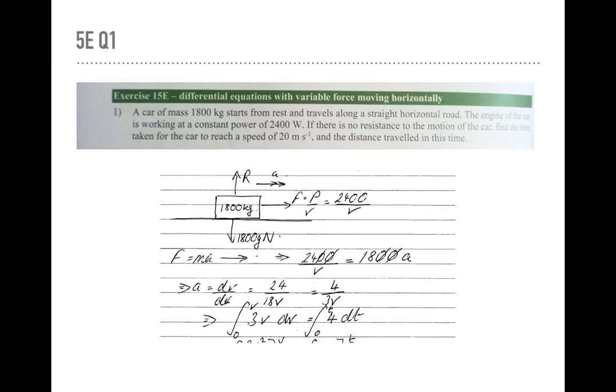Now if we apply F is equal to MA there, we get the mass by the acceleration is 2400 over V. And that brings us to the first line of text. F is equal to MA with the arrow. I would have wrote it backwards. 1800A for MA is equal to 2400 over V. Cancel the zeros. Isolate the A and then because we're looking for the time taken to reach a speed, let A equal to dv dt. That gives me the last line there.